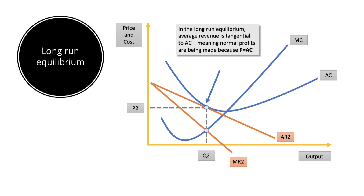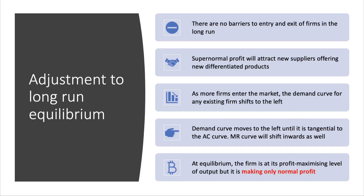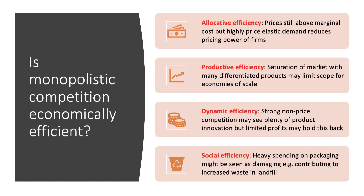Here is the long-run diagram where the firm is just making normal profit — it's worth drawing and practicing this one ahead of the exam. How do we get to the long run? There are no barriers to entry, meaning new suppliers can come into the market with new differentiated products. If profits are high, as new firms enter, the demand curve for any existing firm will shift to the left until it's tangential to the average cost curve. At the equilibrium in the long run, the firm is at its profit-maximizing output where MR meets MC, but it's making only normal profit.